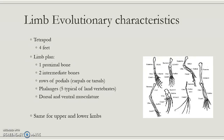With tetrapods, and you can see in the image here, we have cats, whales, bats — all of these are included in the tetrapod group, along with many more organisms. What we see is one proximal bone in the arm — in this case that's the humerus — two intermediate bones, the ulna and the radius, which is your forearm, rows of podials. In humans we call them carpals in the upper limb and tarsals in the lower limb, and then phalanges, which are the fingers.